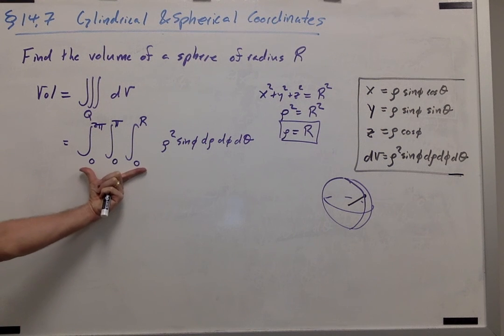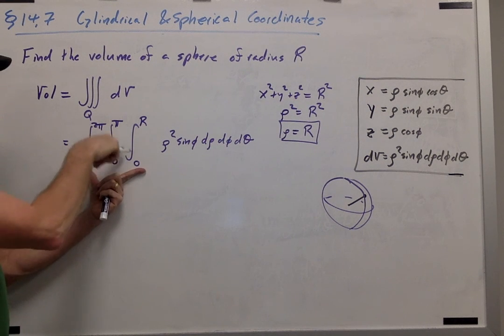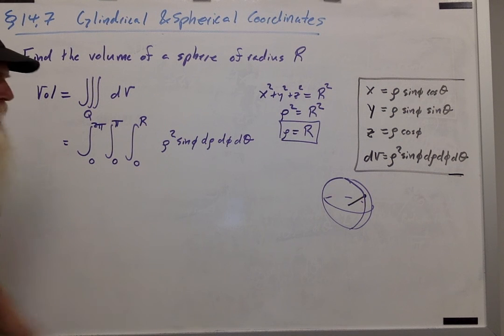Now, here's a fun thing to observe. Notice that all six of my bounds are constants. So that means that in spherical coordinates, a sphere is a rectangular solid.